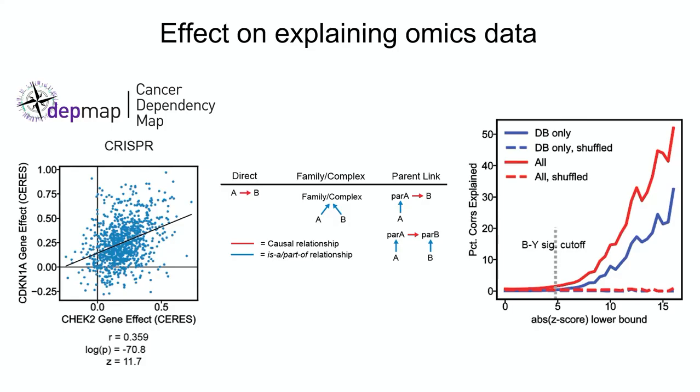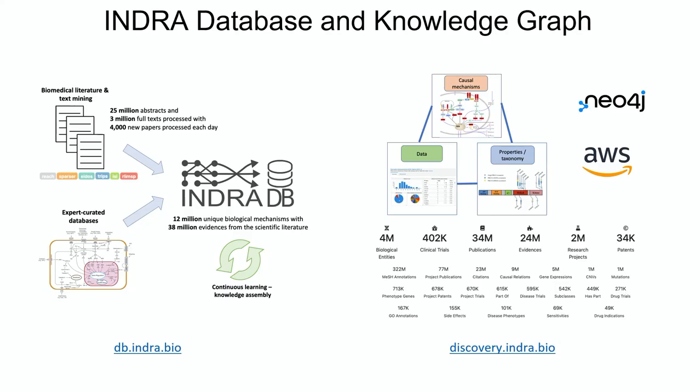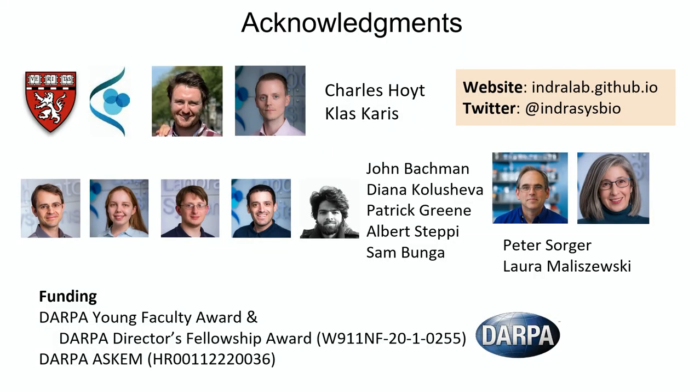You can also use the same assembled knowledge to automatically explain large-scale omics data. In this example we created explanations for cancer dependency map gene-gene interactions, and there's a separation between database-only versus all curves, showing additional value from text mining. Everything mentioned is available through multiple interfaces — the INDRA database at db.indra.bio where you can query for INDRA statements with their evidences, and a knowledge graph at discovery.indra.bio — both through web-based interfaces and APIs.